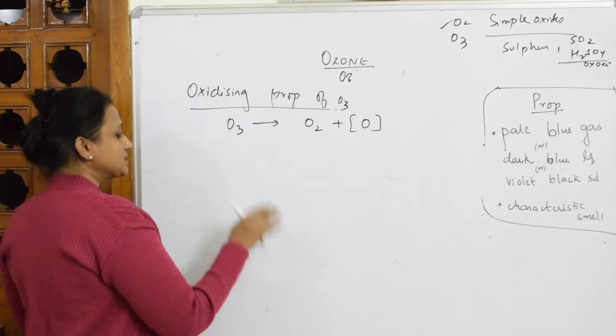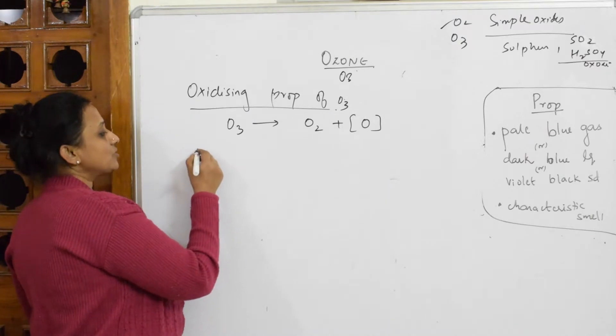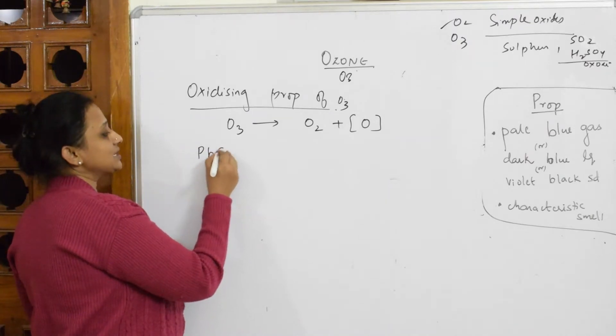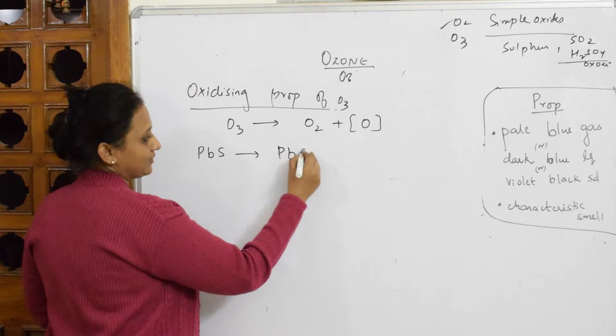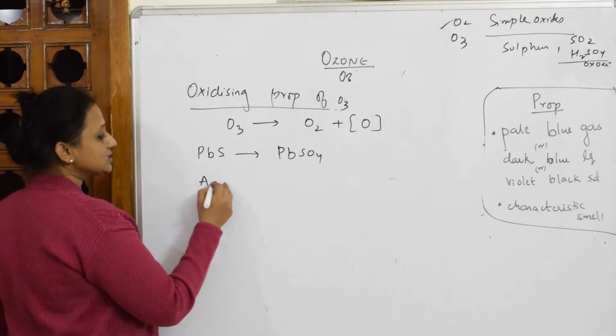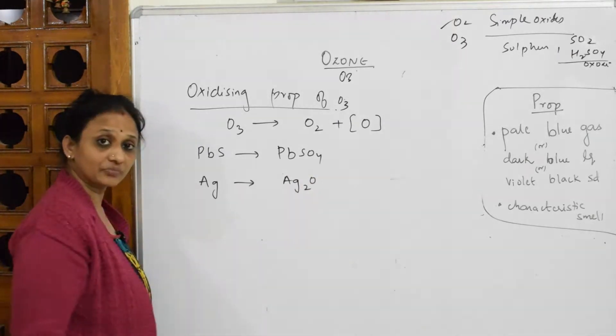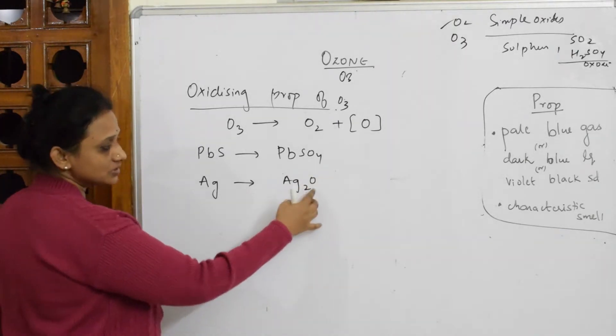For example simple let's take a certain examples. It's going to oxidize your lead sulfide to lead sulfate. We will write the reactions and see. It's going to convert silver into silver oxide Ag2O done. Two valence of oxygen, silver one valence.